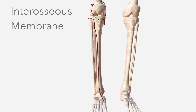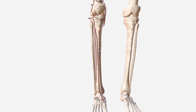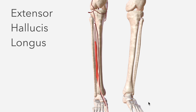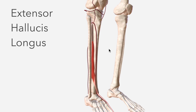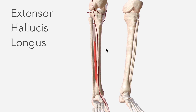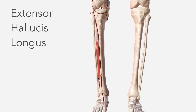It then moves down the anterior aspect of the tibia, and after moving past the ankle joint, becomes known as the dorsalis pedis. Another important relation is the extensor hallucis longus, which arises from the interosseous membrane. Its tendon passes over the anterior tibial artery.